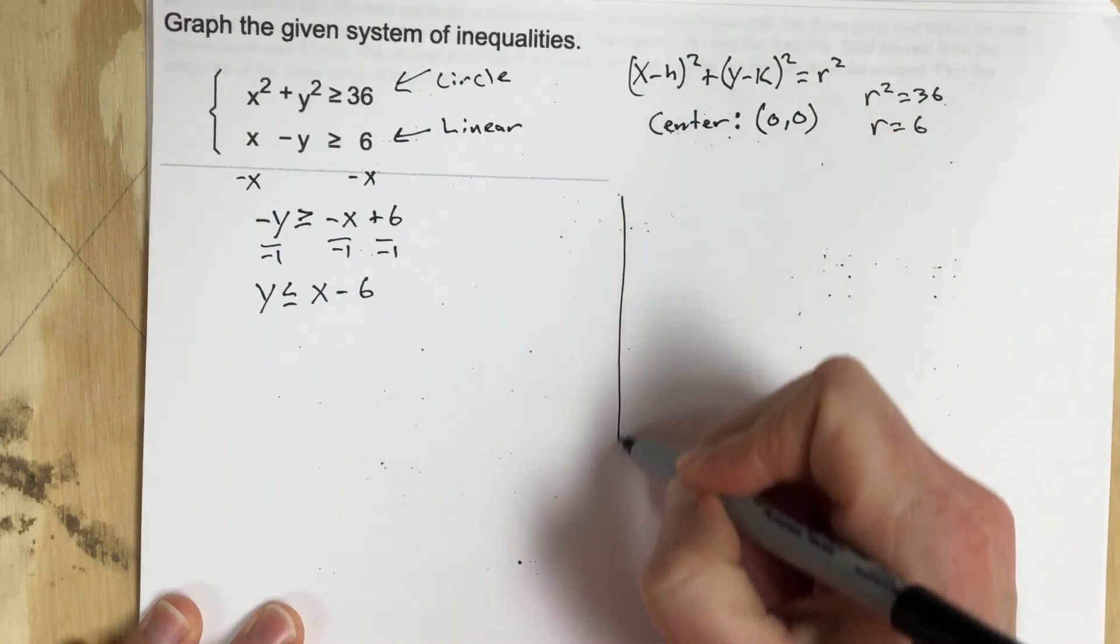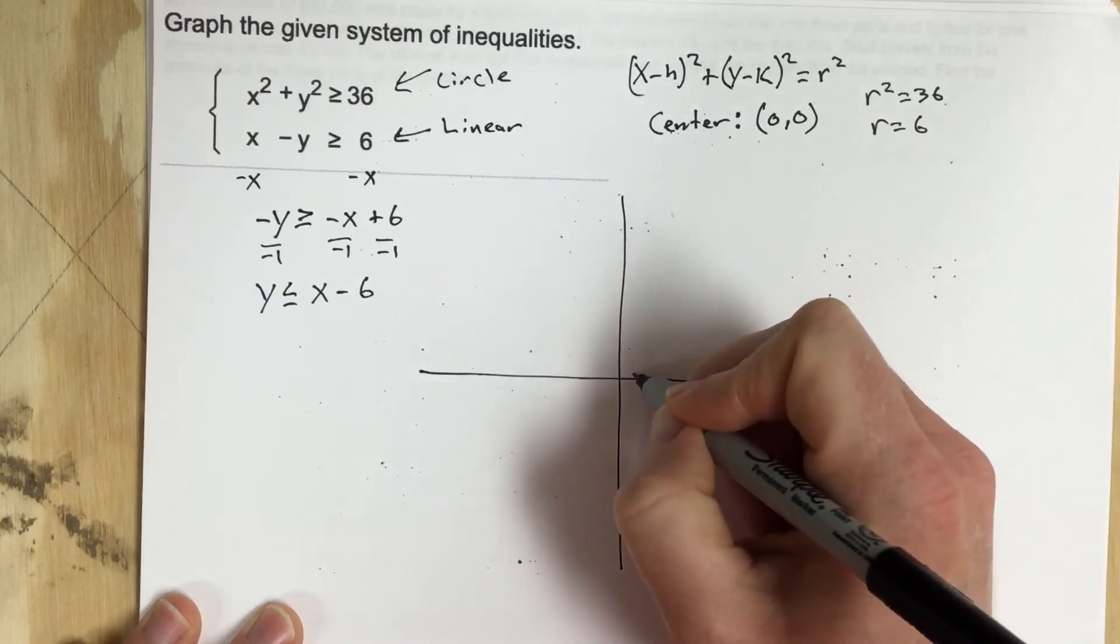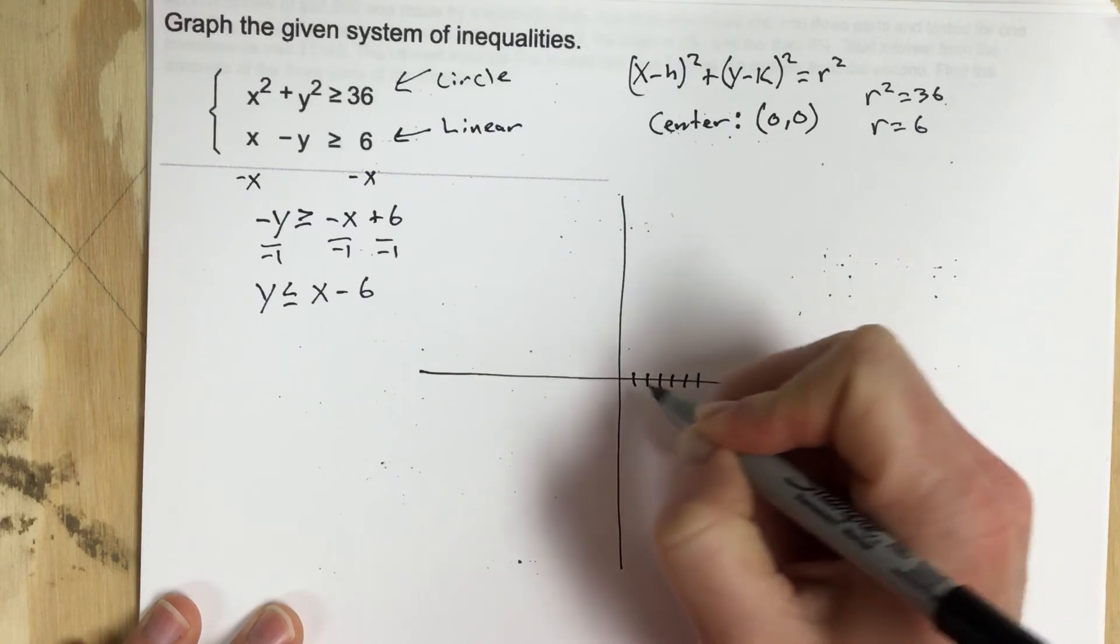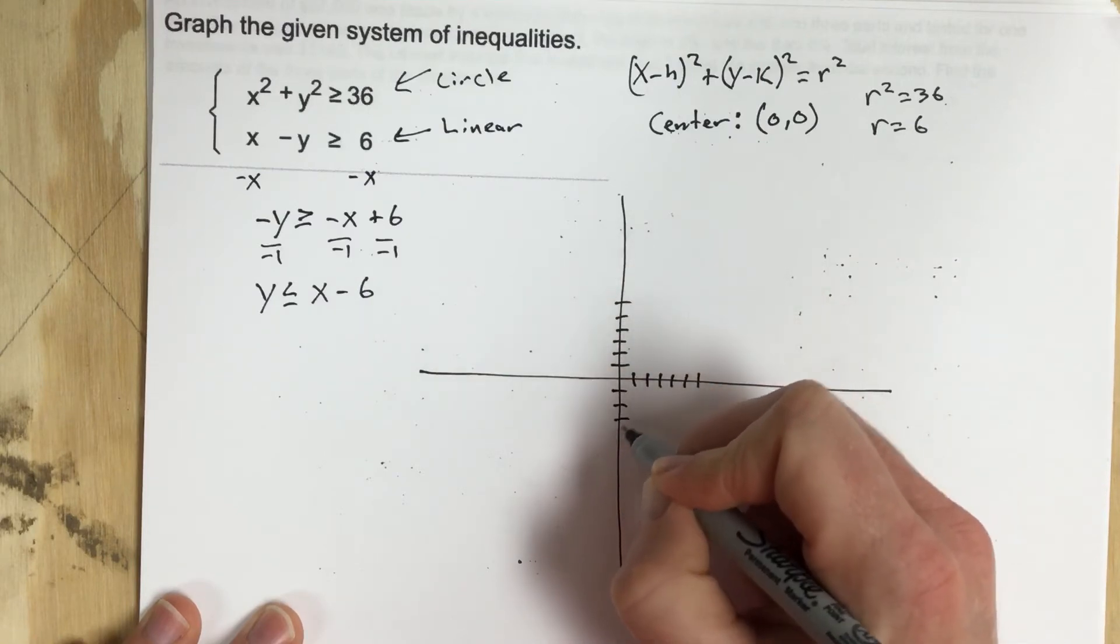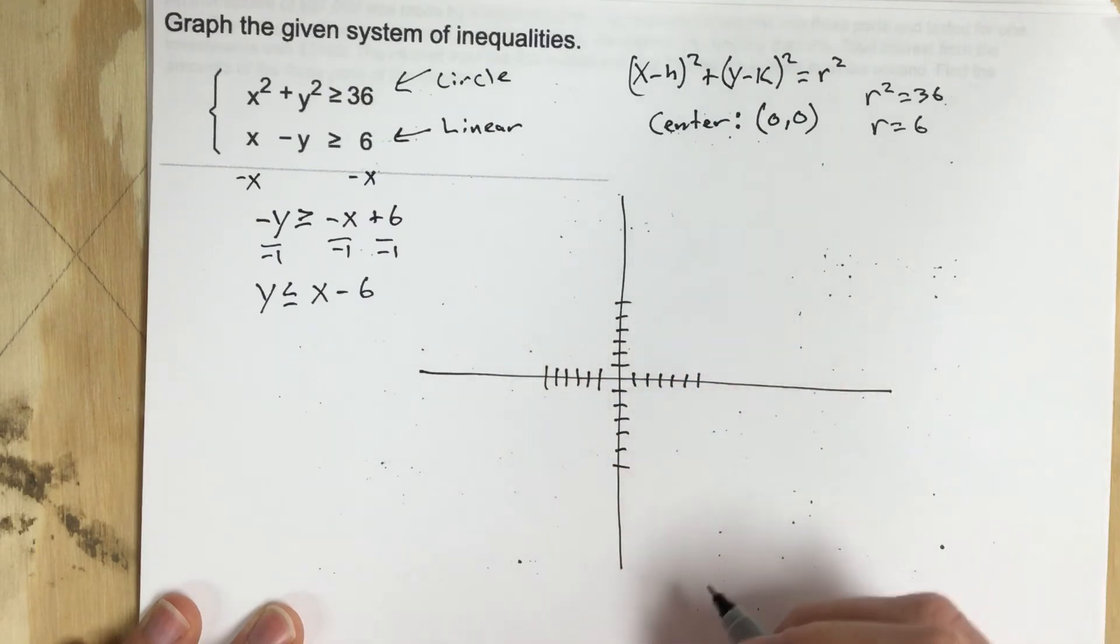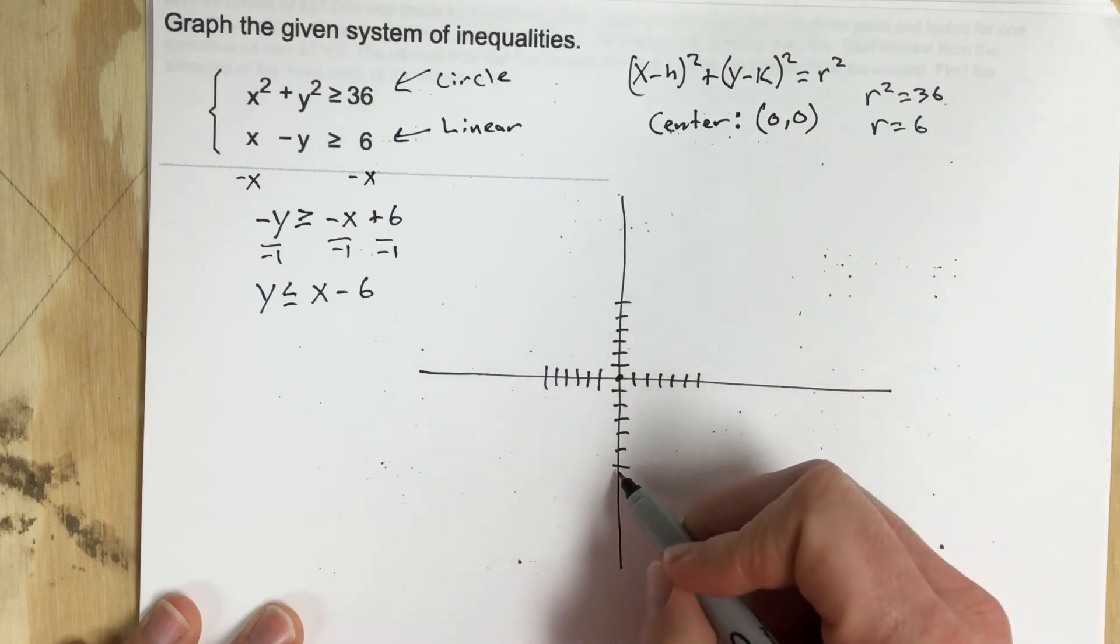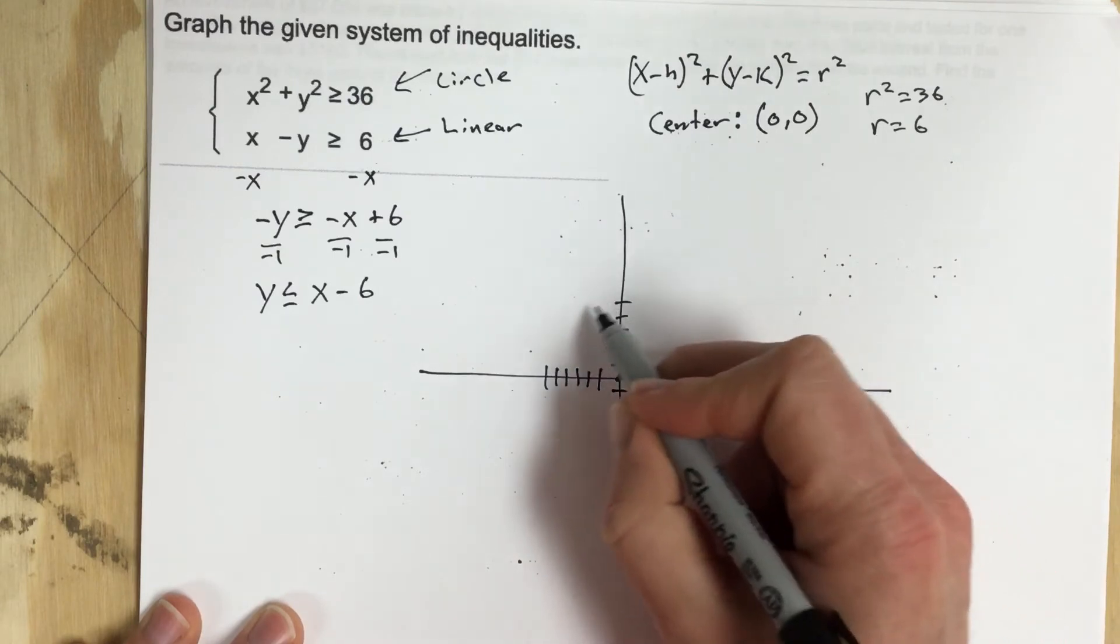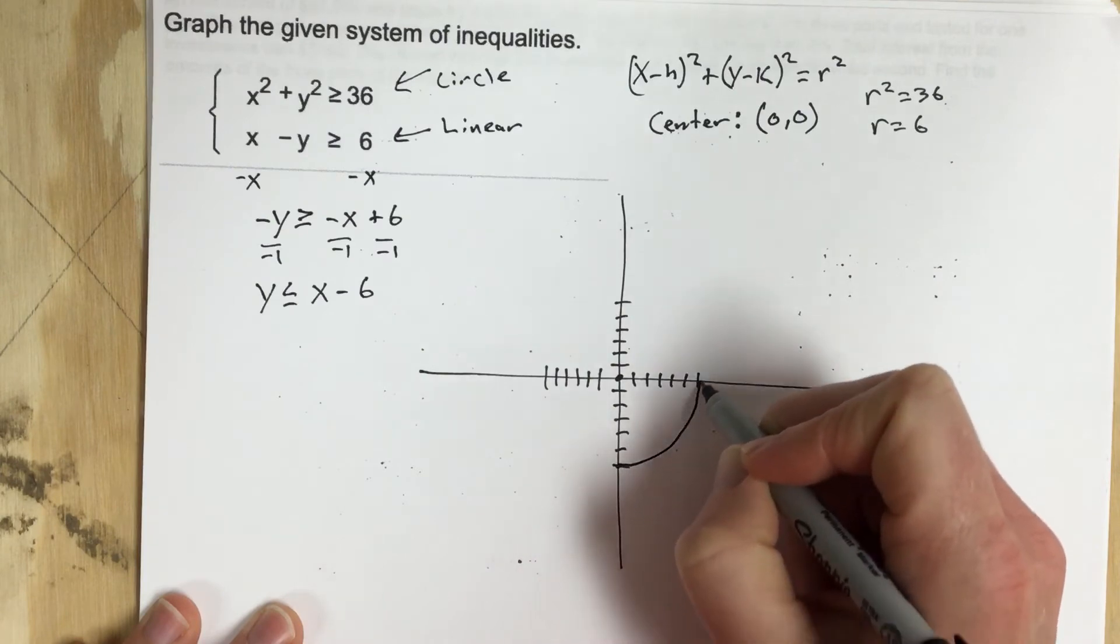Let's go ahead and draw this out. I'm going to mark 1, 2, 3, 4, 5, 6 on each axis. My circle is centered at 0, 0 and goes through and has a radius of 6 so it's going to go around here like so.